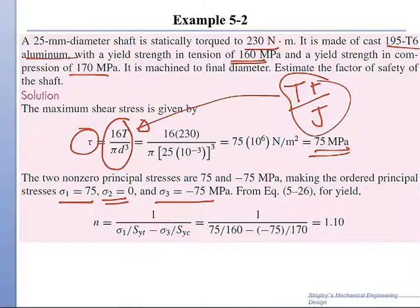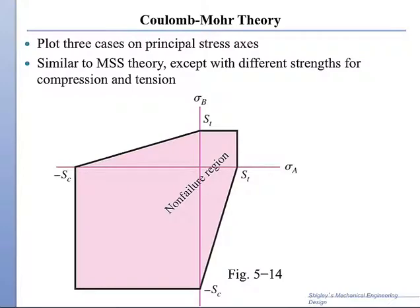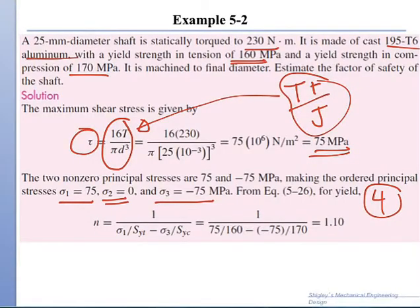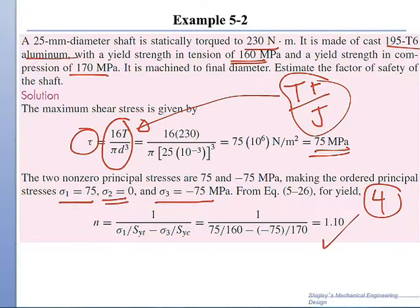With a positive sigma 1 and a negative sigma 3, this falls in the fourth quadrant. Once in the fourth quadrant, the Coulomb-Mohr theory requires using the straight-line equation. Applying that equation and solving for the factor of safety, we get a factor of safety of 1.1.